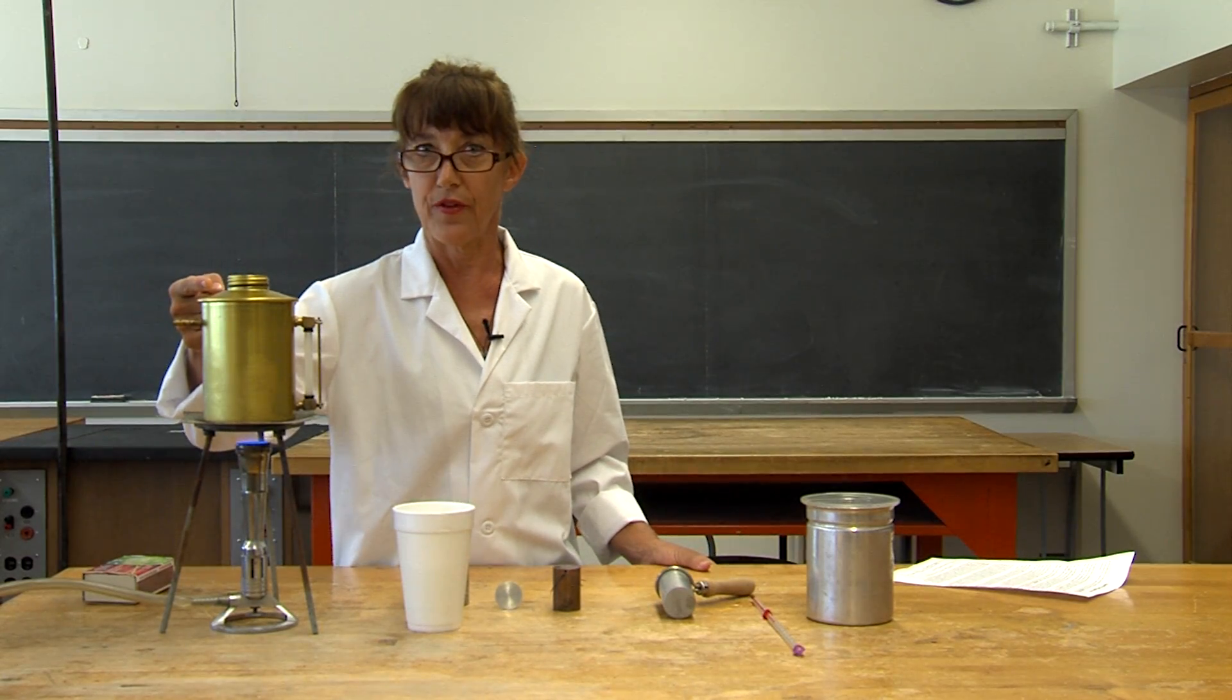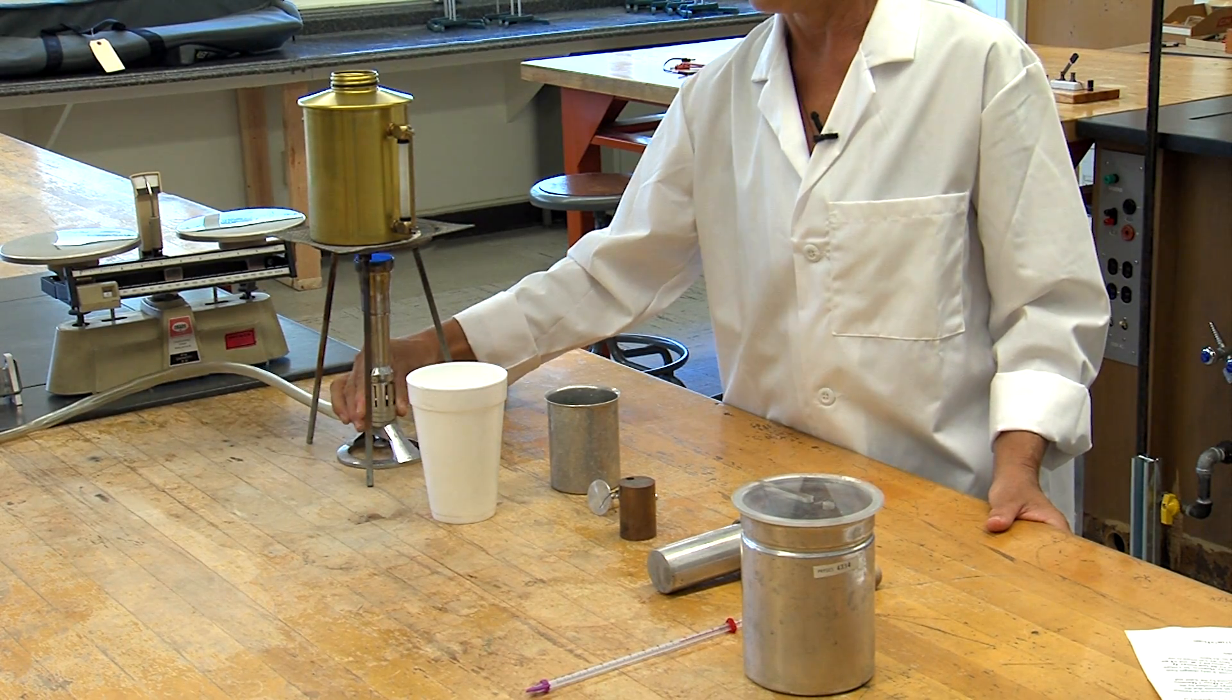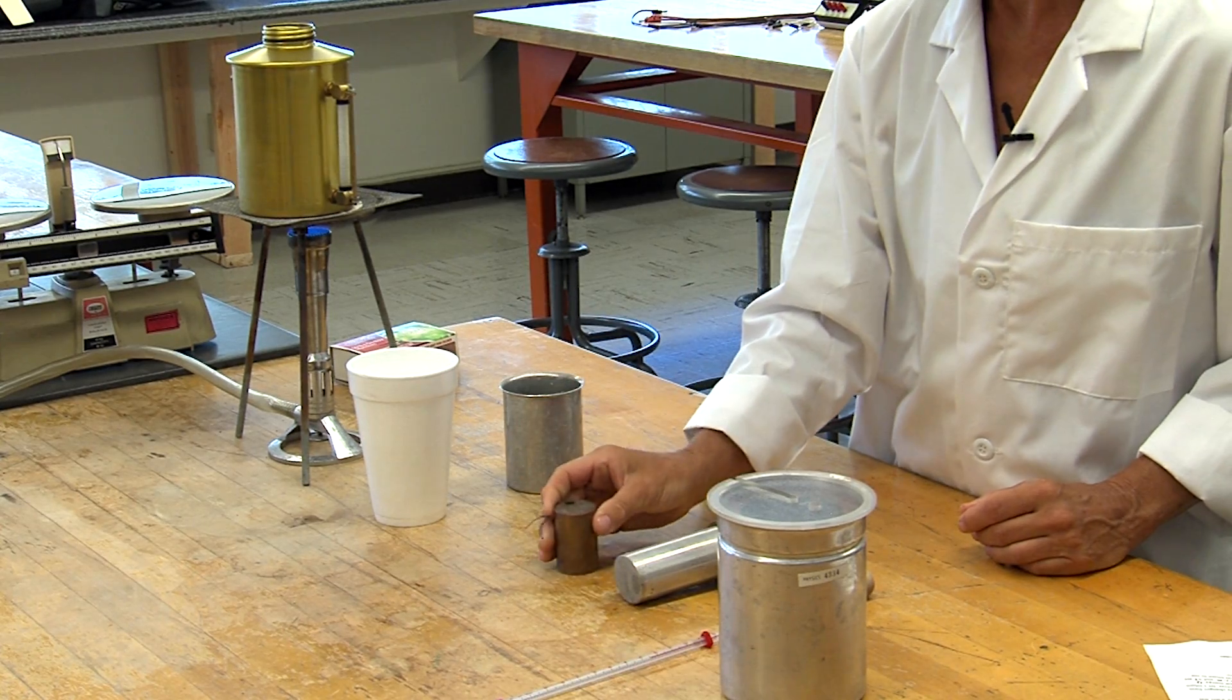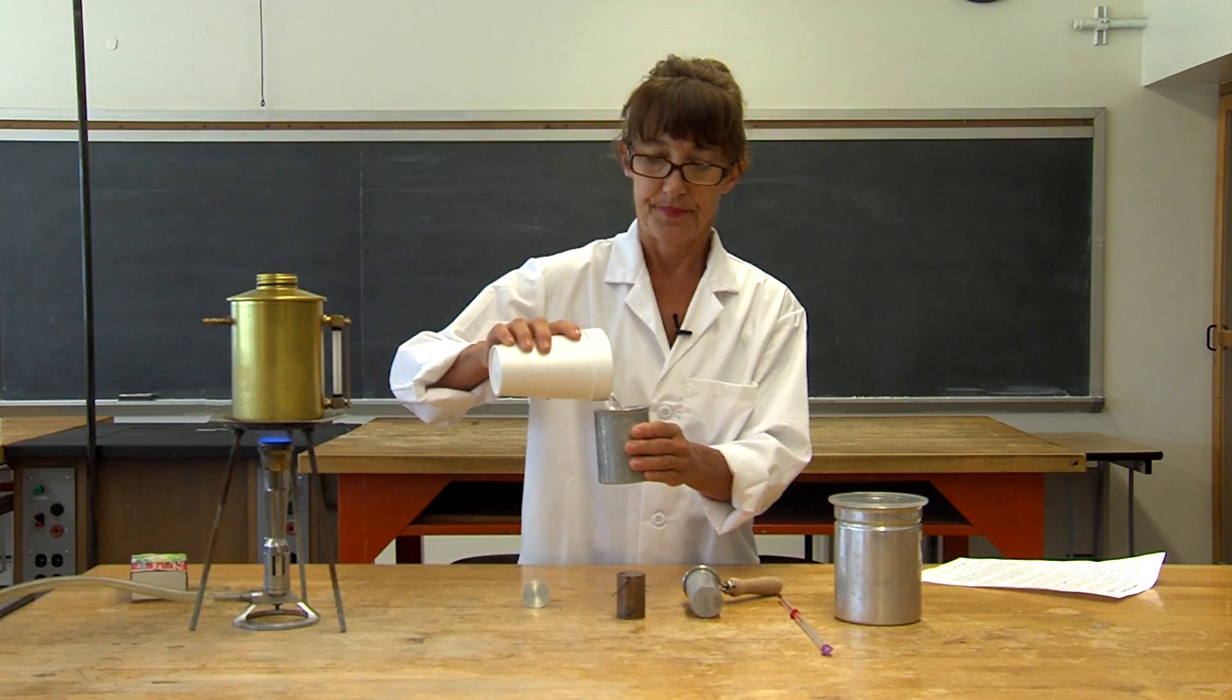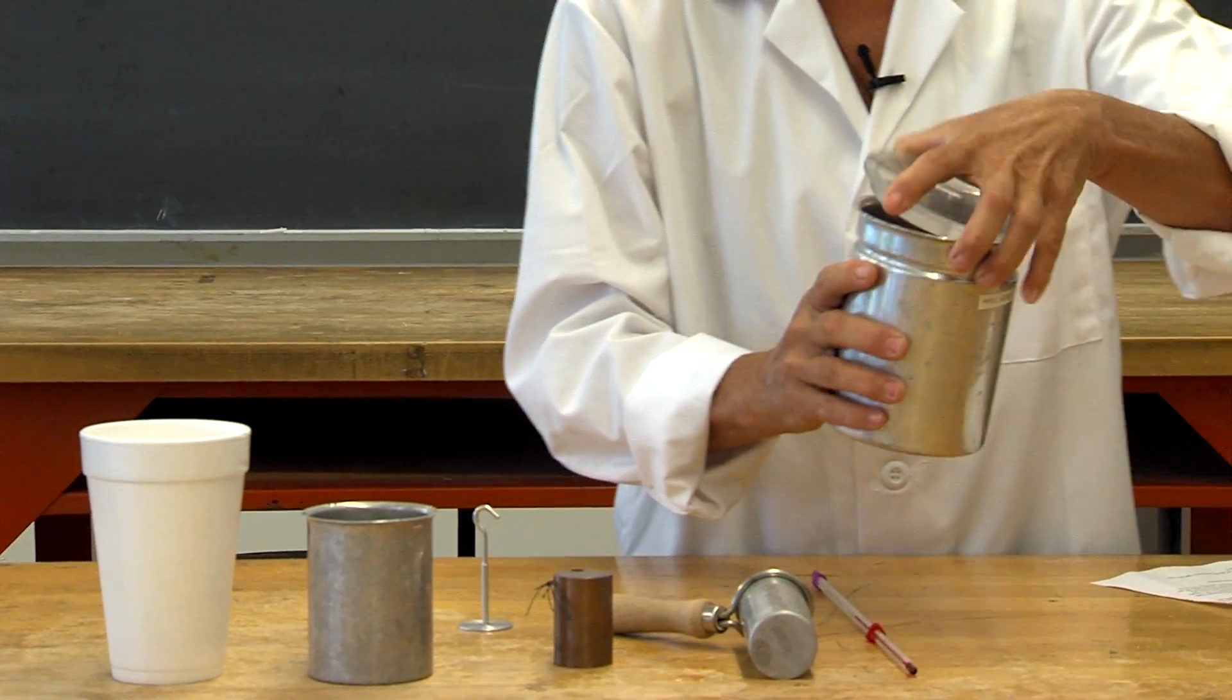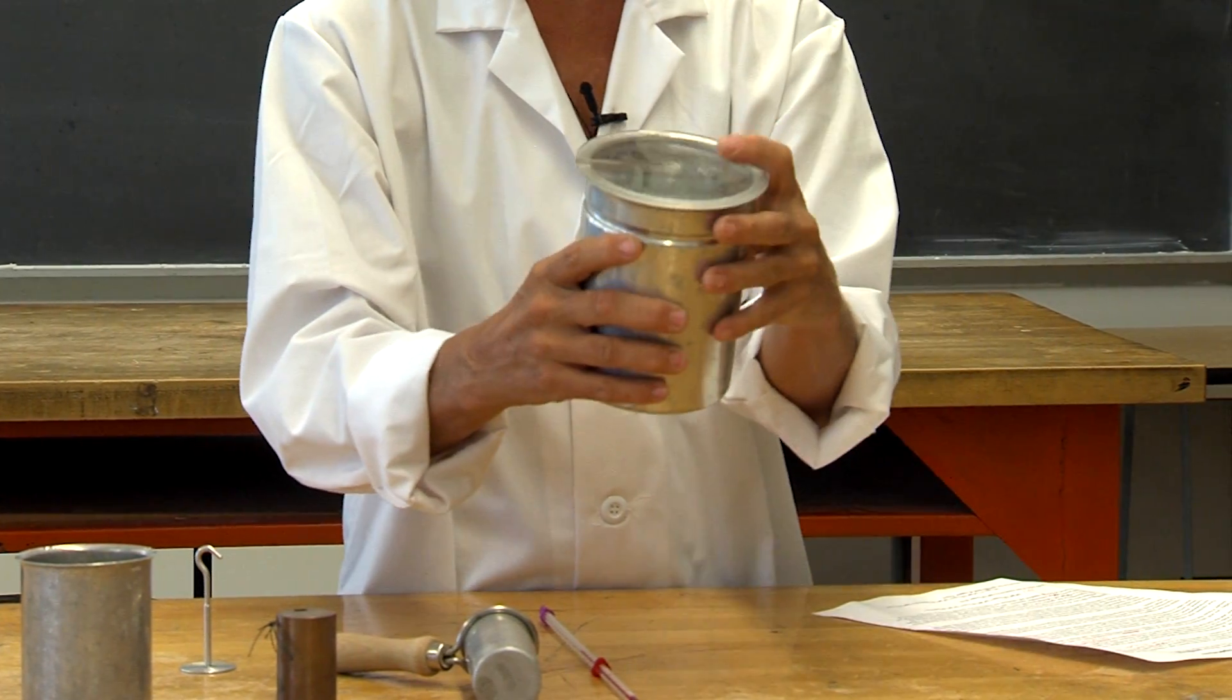To begin with, we'll fill this boiler three quarters of the way full with water and put a flame under it to heat it up. Our system will consist of this copper bar, an aluminum cup, and water. We'll isolate our system from the environment by means of this calorimeter. Don't forget to put the top on.